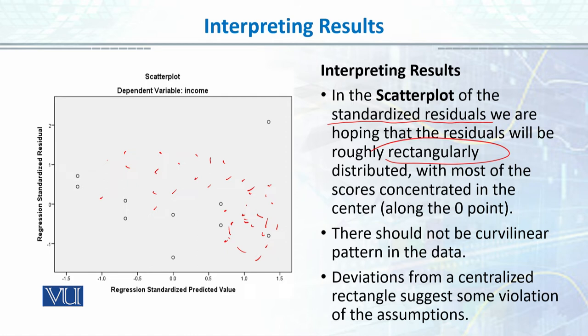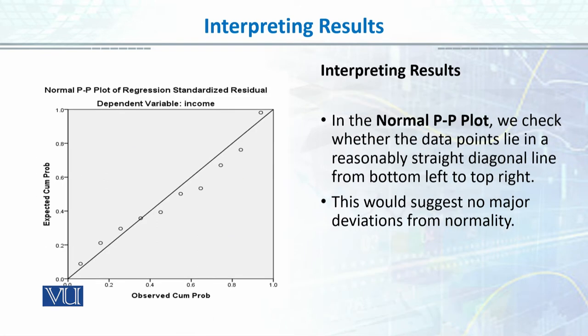A rectangular kind of distribution means your errors are distributed independently against your predicted values. The second assumption is normality. We can check the normality assumption with a PP plot or QQ plot.